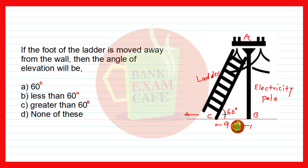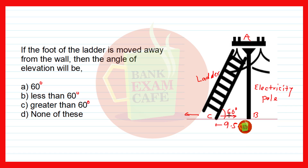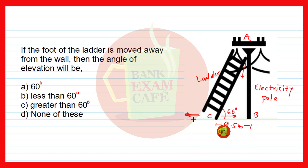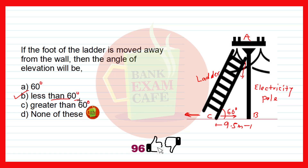When you become closer to the object — here the pole — the angle of elevation increases. So if the ladder is pulled toward the pole, the angle of elevation will be greater than 60 degrees. When you take it away from the pole, the angle of elevation decreases. Similarly, if the top of the ladder is brought down, it also moves away and the angle of elevation decreases. So the correct option is less than 60 degrees.